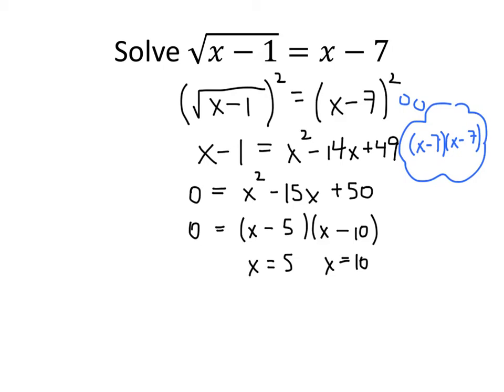Something happened when we squared both sides. We went from an equation with a square root to one without, and in doing so we lost the restriction that x minus 1 inside the square root was not allowed to be negative. So we need to make sure both solutions really satisfy the original equation — they're solutions to the squared equation, but may not both be solutions to the original. With radical equations, you must check your answers, because sometimes the answers you get are not actually solutions to the original equation.